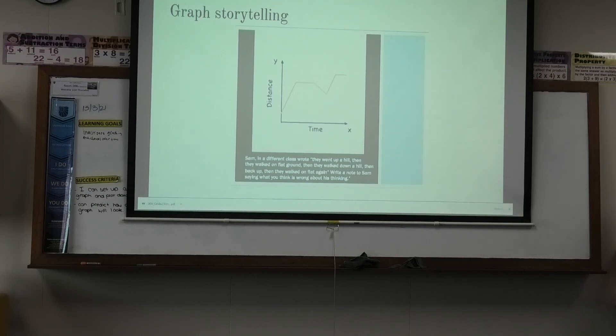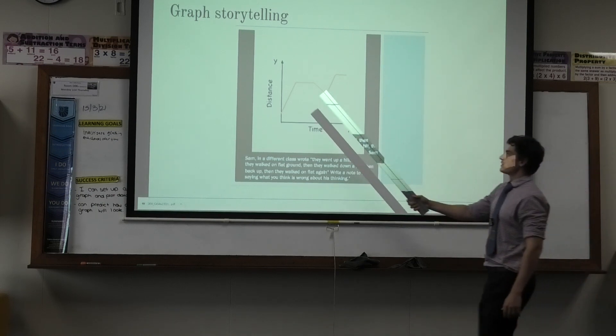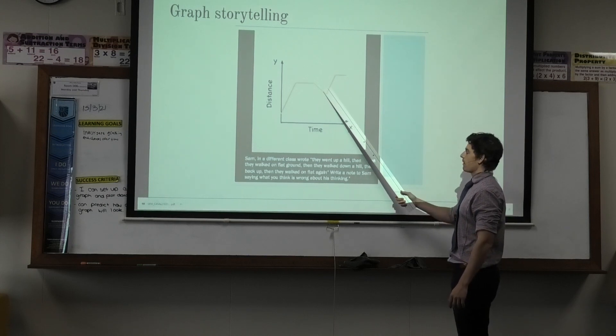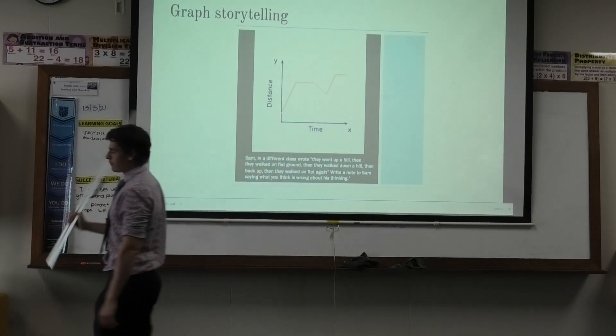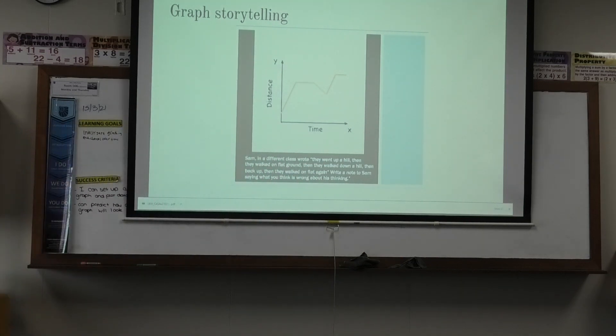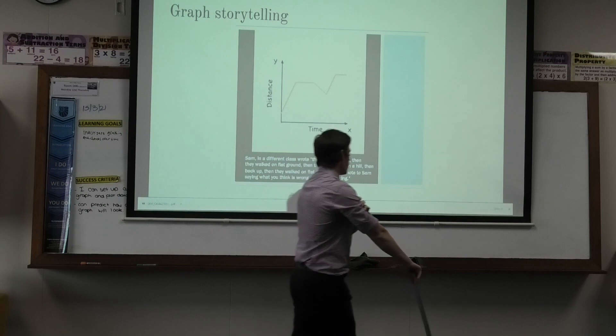They get to the top of the hill, they walk down the hill, then back up, then walk on the flat again. Write down something that you think Sam has done wrong. Sam's done something wrong. I want you to identify what you think he's done wrong. Write it down first.